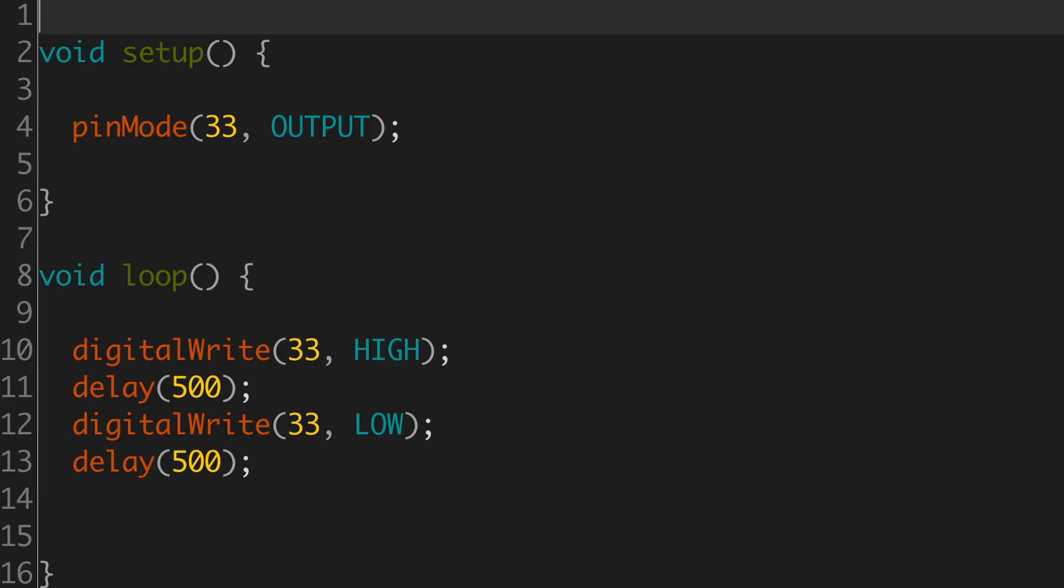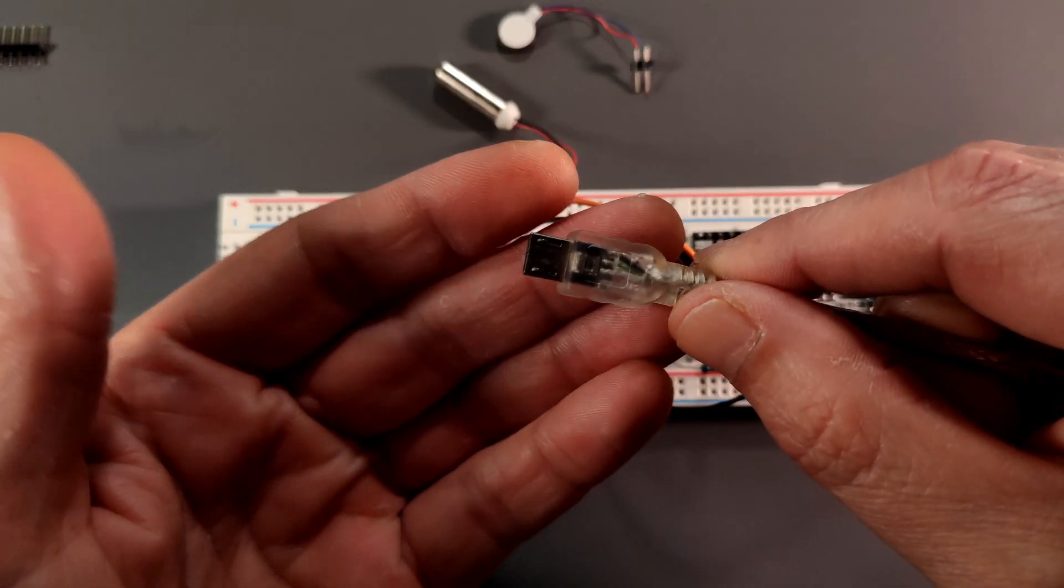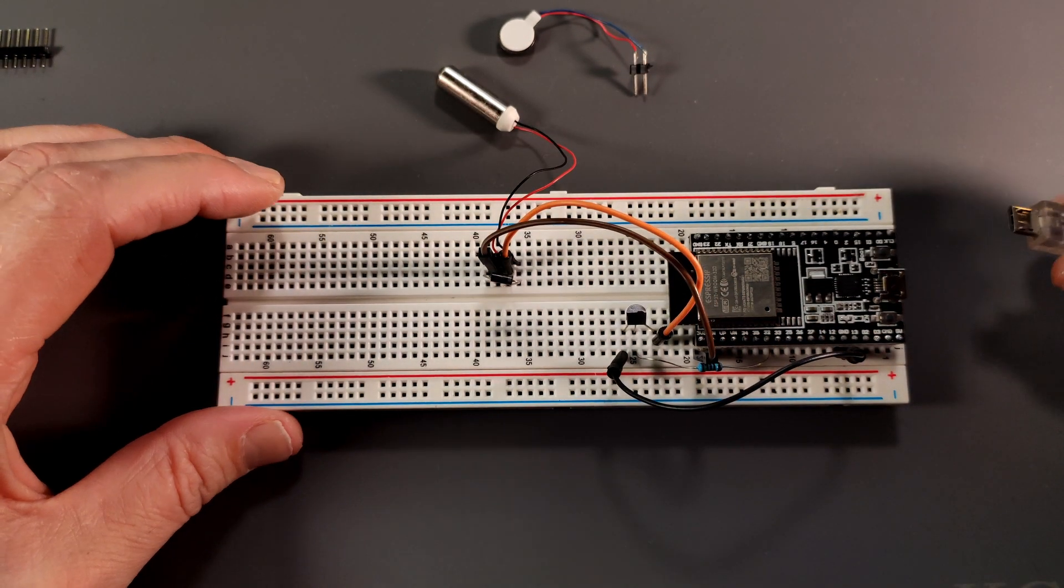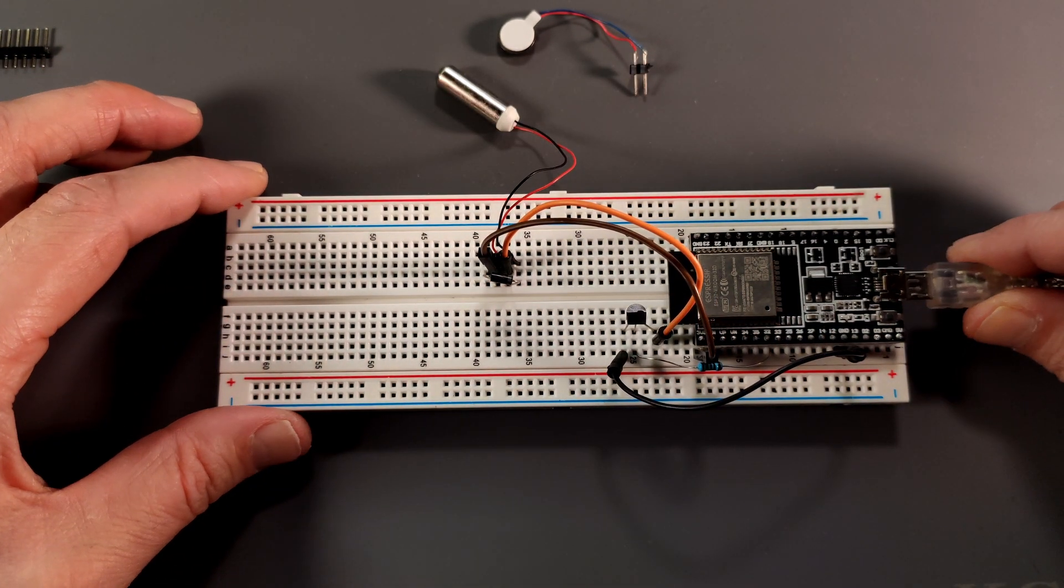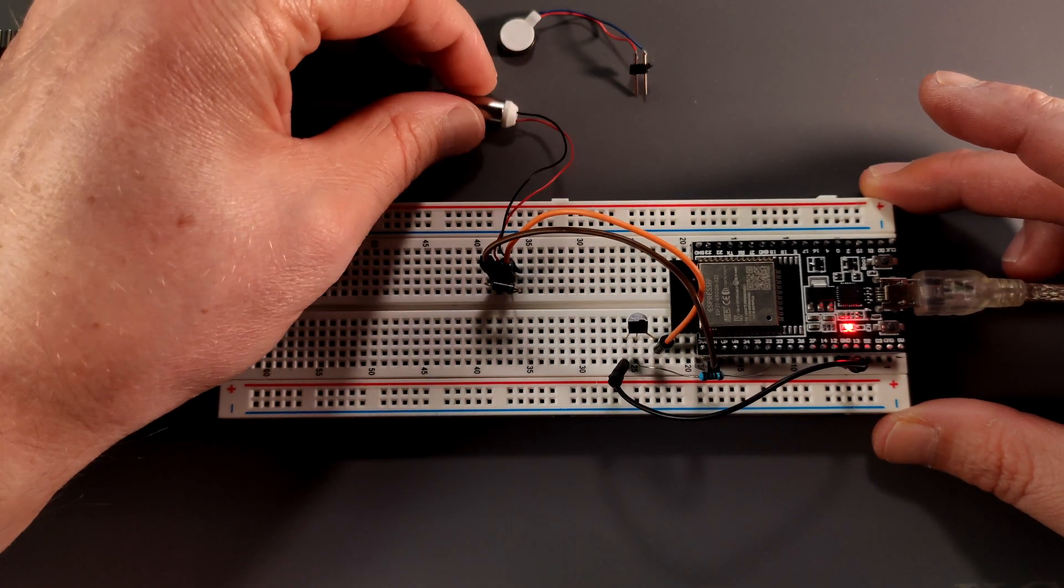Alright, I have written a simple sketch in Arduino. It's just setting pin 33 in this case as an output. And then in the loop I'm setting pin 33 high, waiting 500 milliseconds, setting it low, waiting 500 milliseconds once again and repeating that forever. So if I now plug in my USB cable, it should start doing something. There we go.